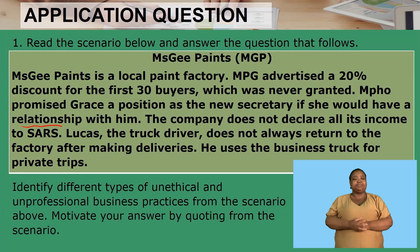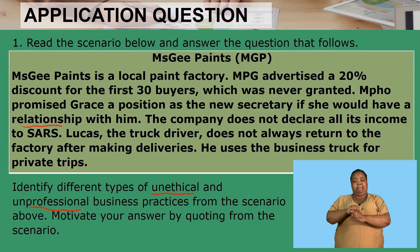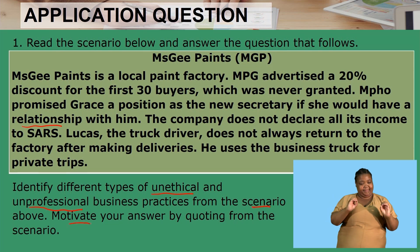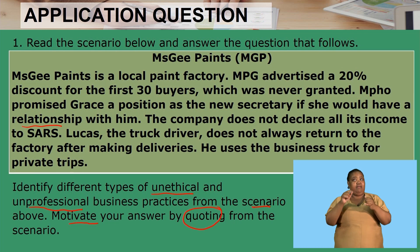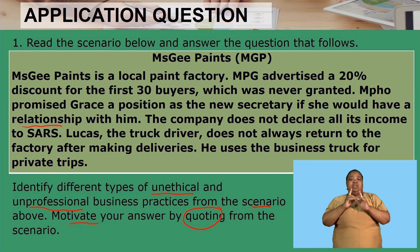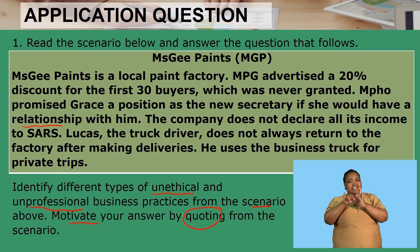The question says: identify different types of unethical and unprofessional business practices from the scenario, and motivate your answer by quoting from the scenario. Now, this scenario speaks of both unethical and unprofessional business practices. When it says motivate by quoting, what do we know about quoting in Business Studies?